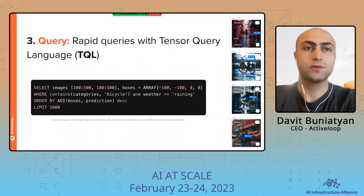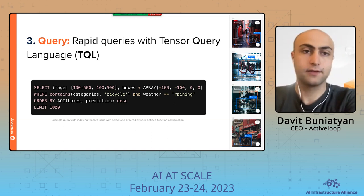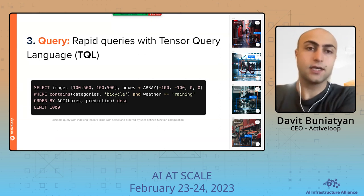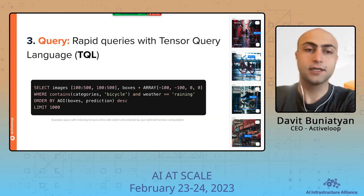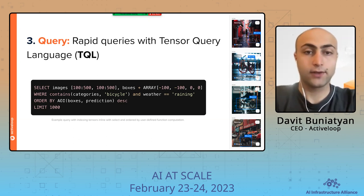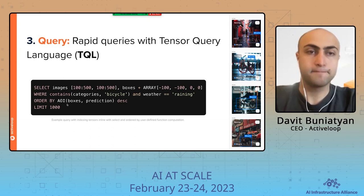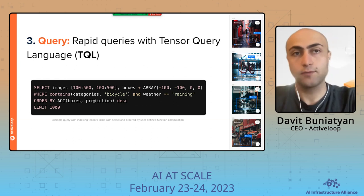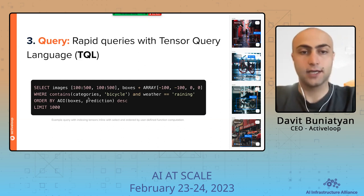Once you build your dataset, you sometimes want to run queries to create a view. For example, you're looking for edge cases like a car driving and seeing a bicycle during rainy weather. We built an extension to SQL called the Tensor Query Language, which not only does simple querying and filtering, but also lets you operate on top of any dimensional tensors inside the query language itself. Directly inside the query engine, you can crop images, adjust bounding boxes, and apply user-defined transformations to sort images based on bounding boxes from a previously predicted model for fine-tuning or re-annotation.